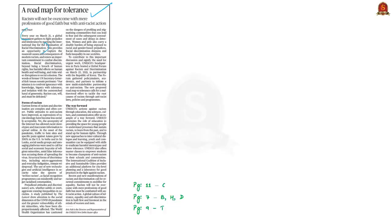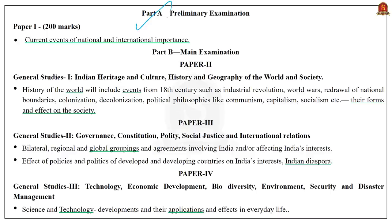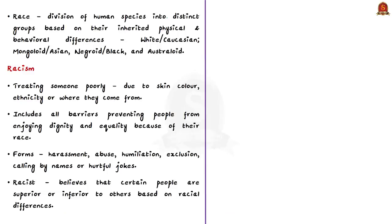The syllabus relevant to this discussion is given here for your reference. Race refers to the division of human species into distinct groups based on their inherited physical and behavioral differences. Some of the races in the world include White or Caucasian, Mongoloid or Asian, Negroid or Black, and Australoid.